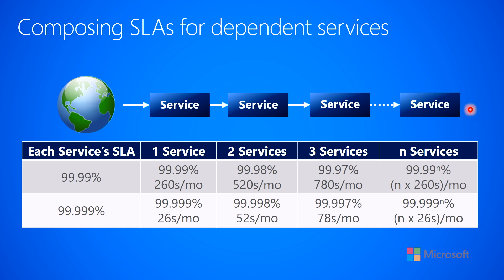If you go so far as to do N services, the formula is 99.99 to the Nth power, or N times 260 seconds per month if you're trying to reach 99.99% of the time. In other words, offering or maintaining your service level agreement becomes much harder when you split a monolith into multiple services.